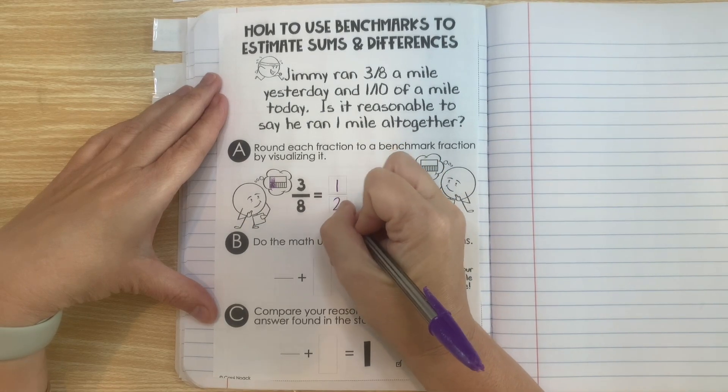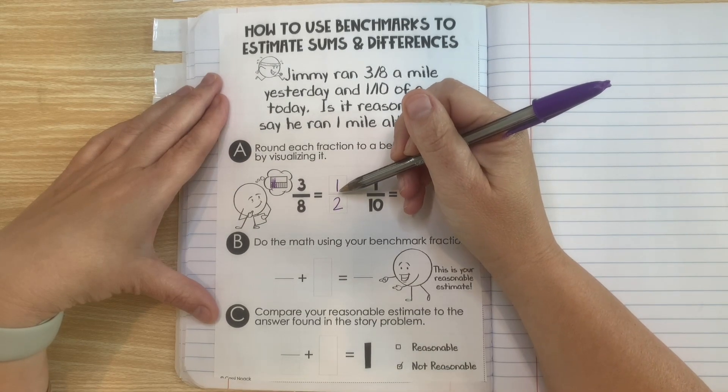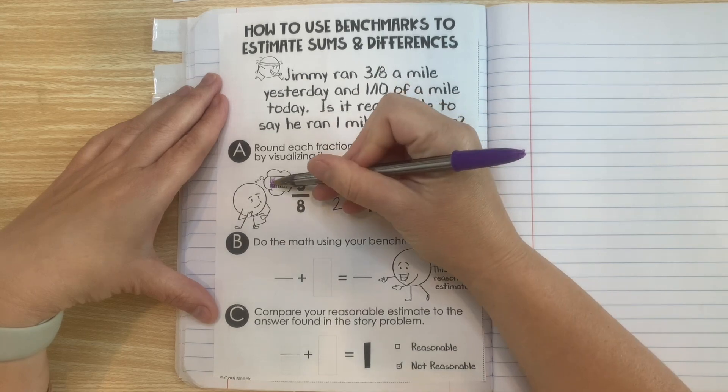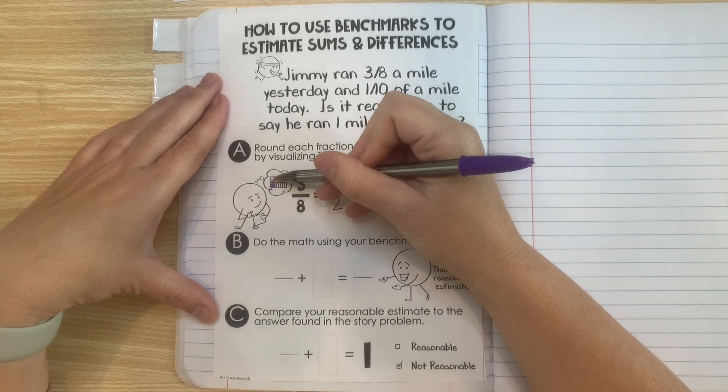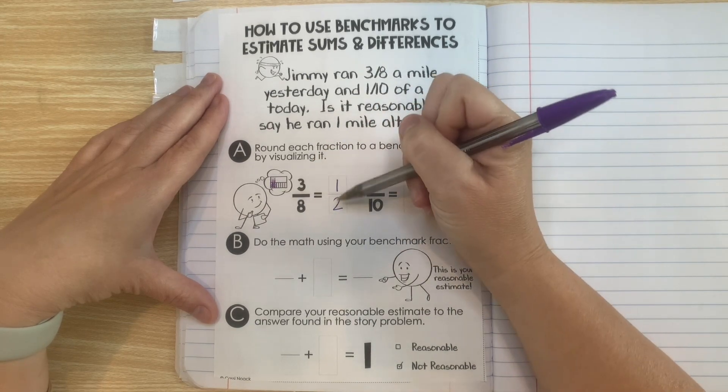I think if you did it to one-fourth, you would be okay there too. Sometimes a fraction is right in the middle of two benchmarks and you can pick either one.